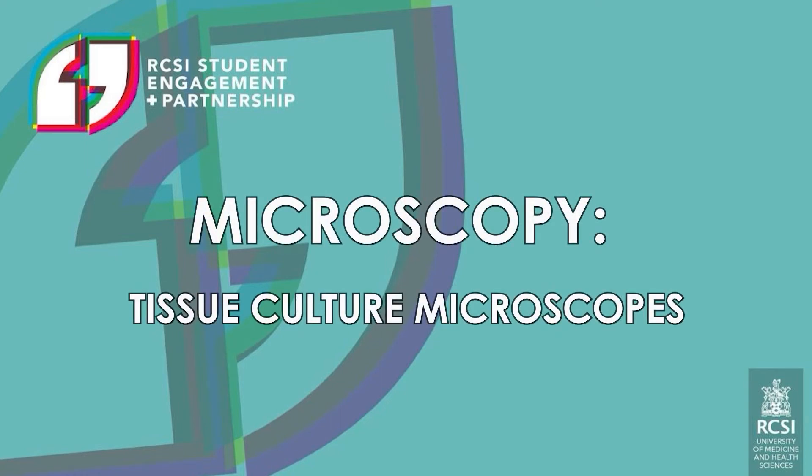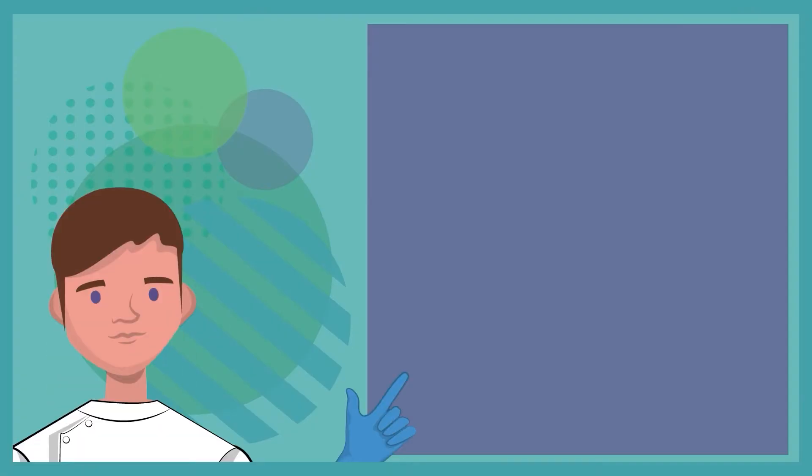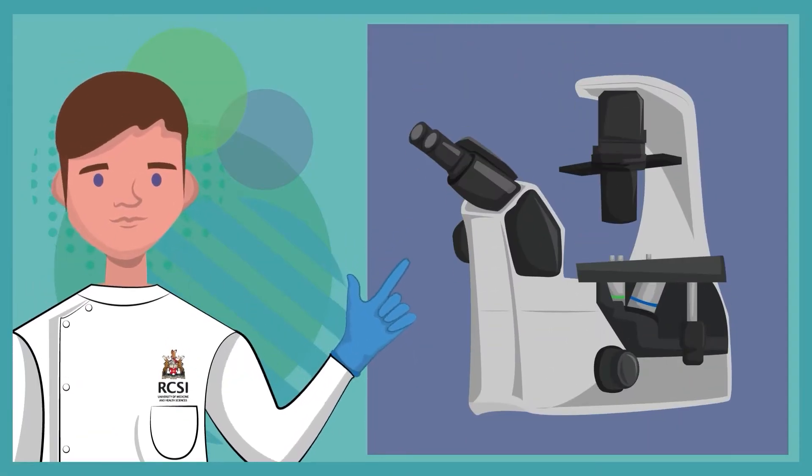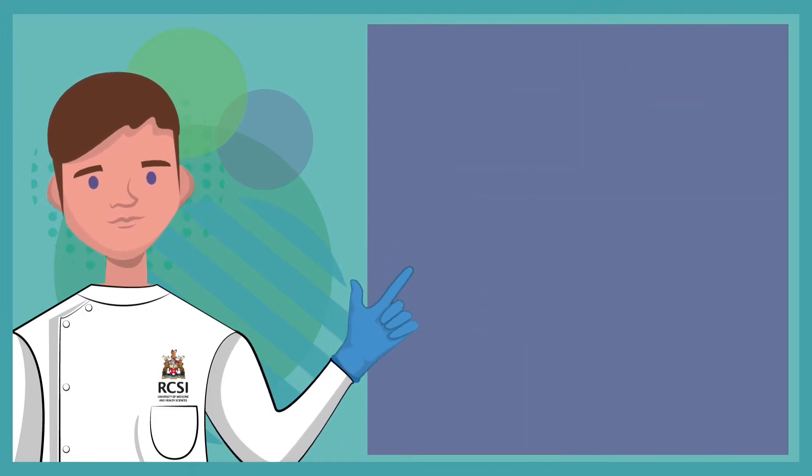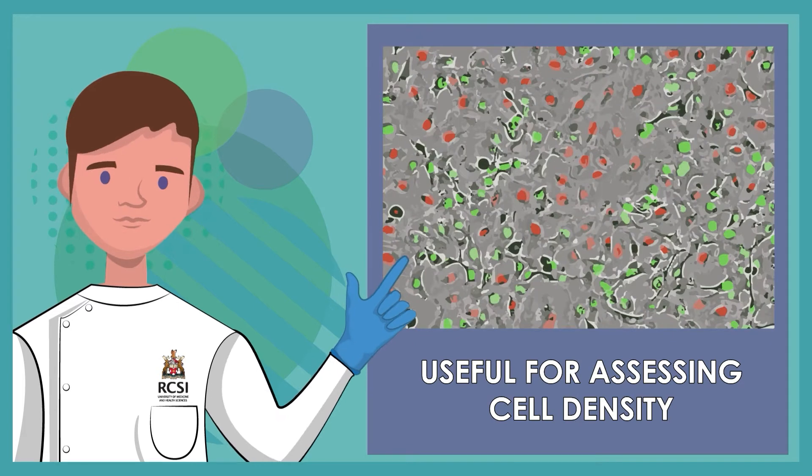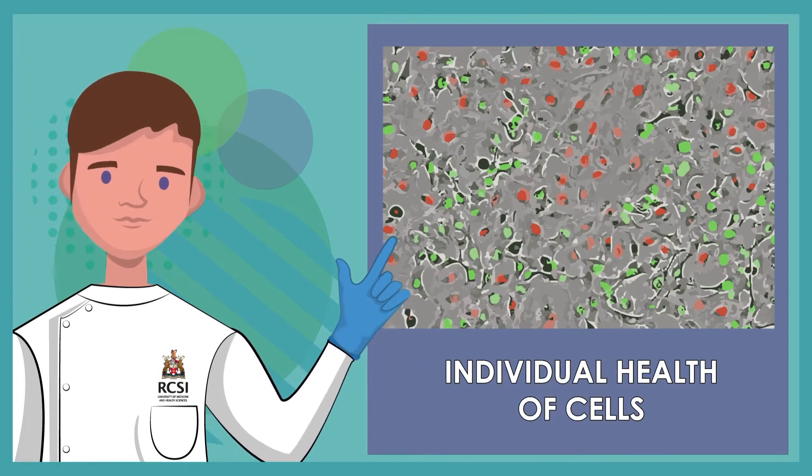This module will cover the basics of using three different microscopes that are commonly used within the lab. Tissue culture microscopes are very useful tools commonly found in cell culture laboratories. They are very useful for assessing the density of your cell population or the individual health of cells.